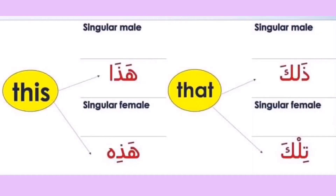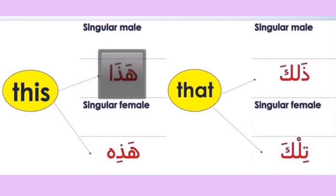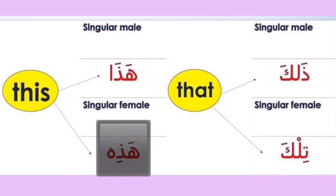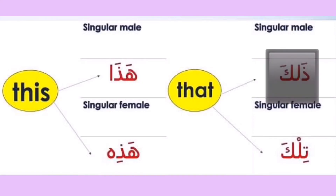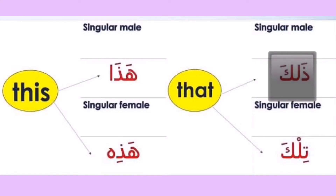Now look at this table to see what we have discussed. 'This' equals هذا for singular male and هذه for singular female. 'That' equals ذلك for singular male and تلك for singular female.